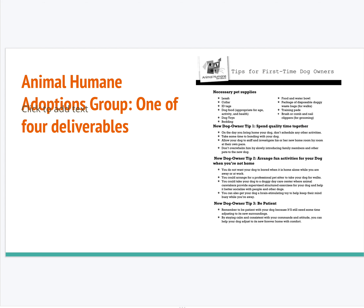I wanted to show you one example from a previous class. This is an output that the adoptions group created for Animal Humane — an information sheet for first-time dog owners. They didn't have a legacy document, so they had to interview their subject matter expert, the director of the adoptions group at Animal Humane, to learn what he thought was important to include. They also researched what other similar documents looked like. They went through many drafts, learned how to emphasize important information, chunk their text, and create a logo — and it ended up looking really beautiful.